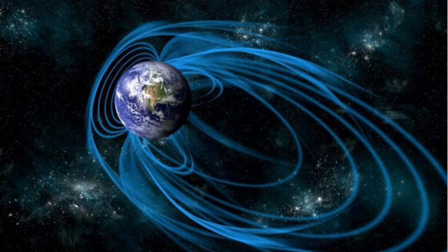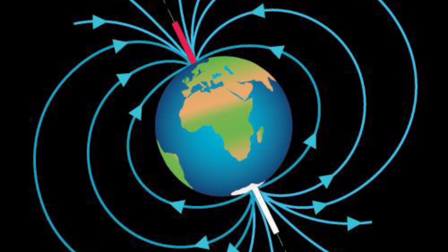The Earth behaves as a magnetic dipole inclined at a small angle, 11.5 degrees, to the Earth's axis of rotation, with its south pole pointing geographic north.